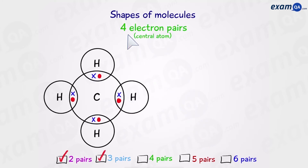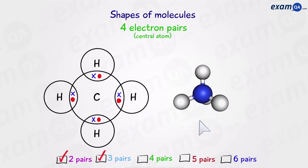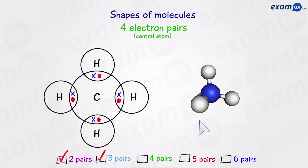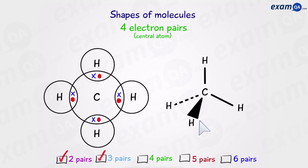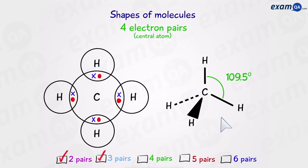Moving on to four electron pairs — using the example of methane, we can see there are four bonded pairs of electrons. In this molecule, the angle between the bonds is 109.5 degrees — you're going to have to memorize that. It doesn't matter which angle you measure; every single angle is 109.5 degrees. The name for this shape is tetrahedral.